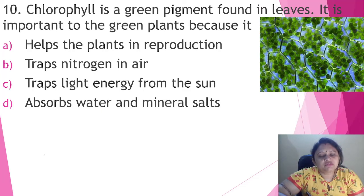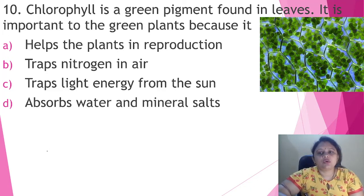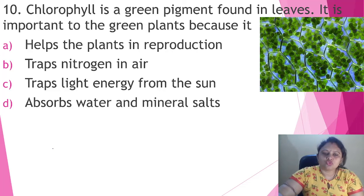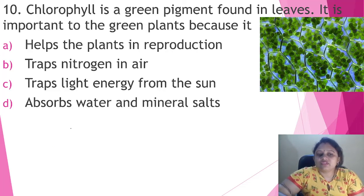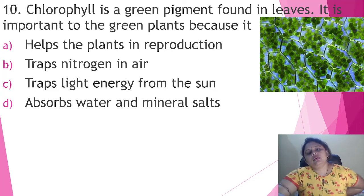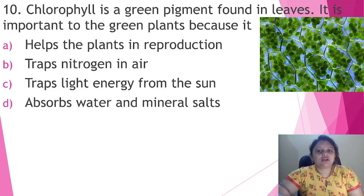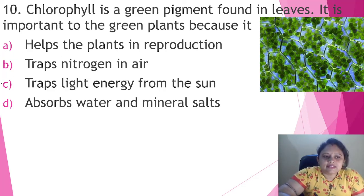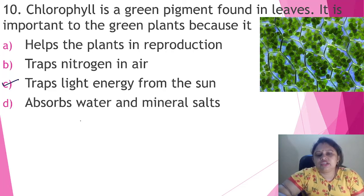Chlorophyll is a green pigment found in leaves. It is important to green plants because — we know that due to the presence of chlorophyll, green plants are capable of synthesizing their own food in a process known as photosynthesis. In presence of chlorophyll and sunlight, carbon dioxide and water react to form oxygen and glucose. So the function of chlorophyll is that it traps light energy from the sun. The correct answer is option C, trap light energy from the sun.